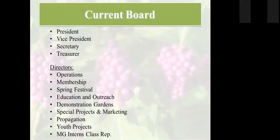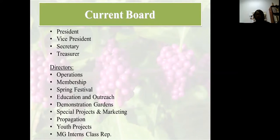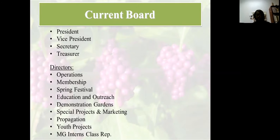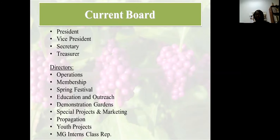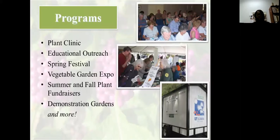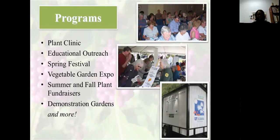Our current board has a president, vice president, secretary, and treasurer, with directors for each of the programs. I run my Master Gardener program just like a business. We have an operations director in charge of the plant clinic, a membership chair, a spring festival chair, an educational outreach chair, demonstration garden chair, marketing and special project chair, propagation youth chair, and a representative from each new class.